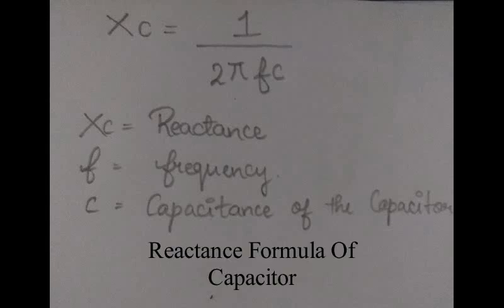The formula above is for calculating the reactance of the capacitor, as we calculated in the low pass filter. Xc is the reactance of the capacitor, the term F represents the frequency of the signal given as the input to the capacitor, and C is the capacitance of the capacitor.